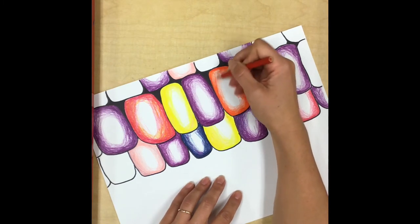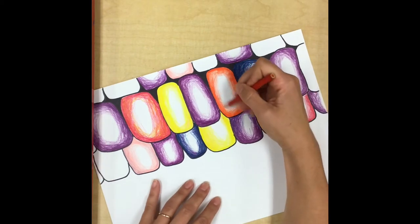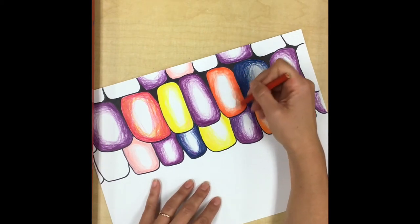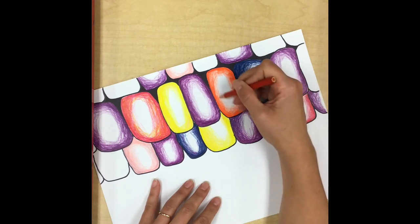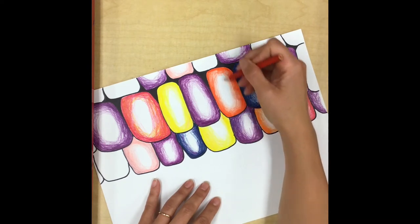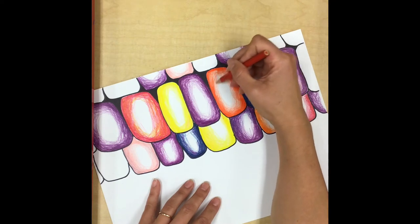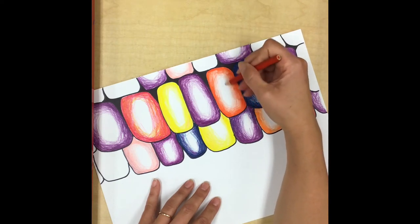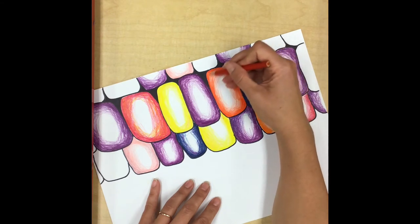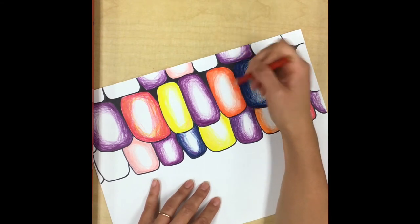And then I always kind of go back and make sure that my coloring looks even. I don't want to be able to see any scribbly pencil lines. It should just look like a smooth area of color, making sure that this ends up looking like an oval there we go.